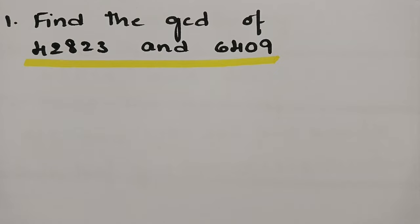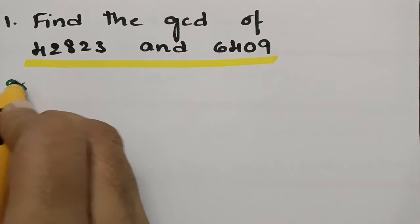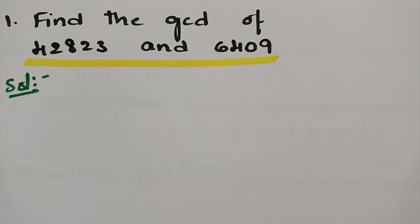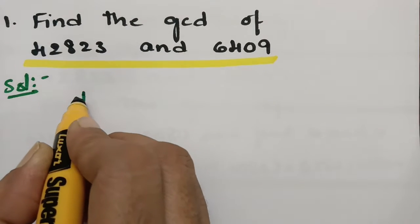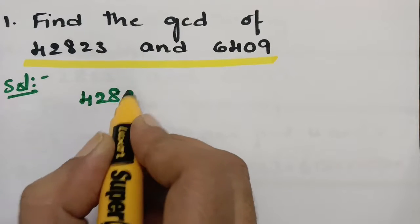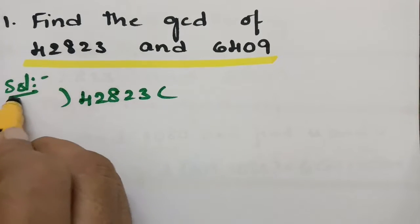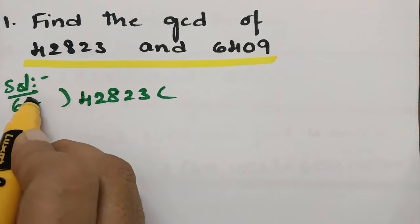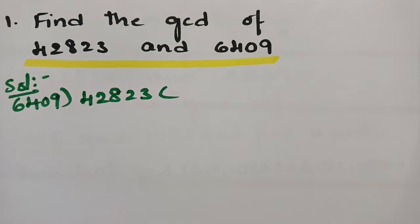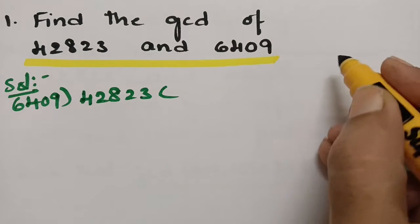In order to find the GCD, we have to divide using the division algorithm. So which number is bigger and which is smaller? I am dividing 42823 by 6409. If I divide, this goes in 6 times.